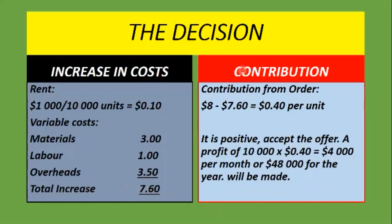If we look at the contribution we're going to get from the order, the contribution is equal to the sales price minus the variable cost. So we will make $0.40 per unit on that special order. The $0.40 is positive, so we accept the offer. A profit of 10,000 units times $0.40 equals $4,000 per month, or $48,000 for the year, will be made.